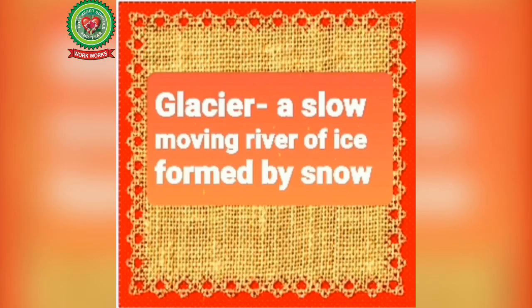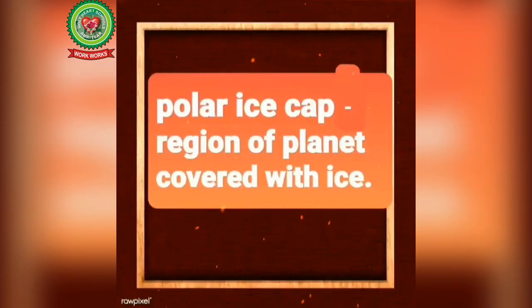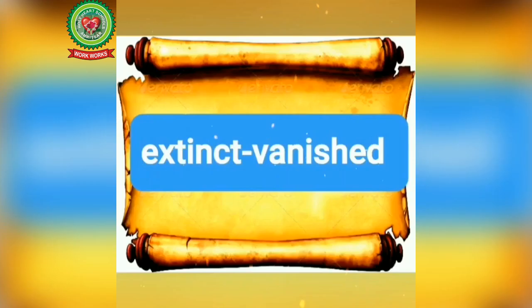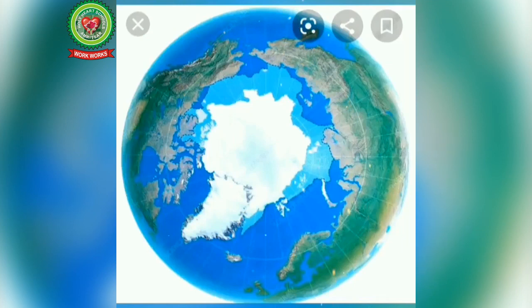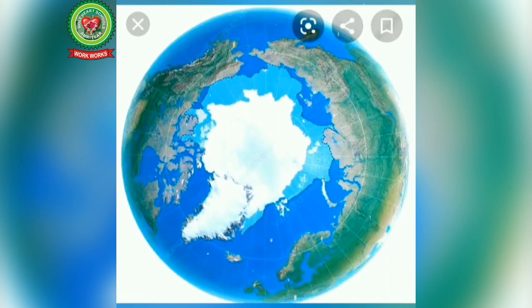Glacier means a slow-moving river of ice formed by snow. Polar ice cap means a region of a planet covered with ice. Extinct means vanished. Due to global warming, the temperature of the earth is increasing day by day, resulting in the melting of glaciers and polar ice caps. This is a picture of a polar ice cap — the white part is called the polar ice cap.